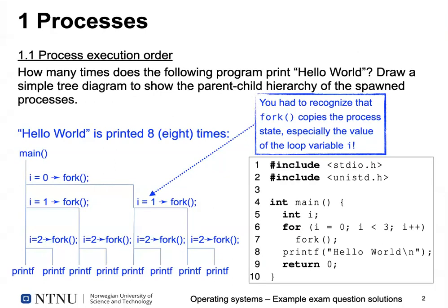The key trick here is to know that fork copies the state of a process — it doesn't start from scratch. It keeps the information about which loop iteration we are in and continues from there, instead of starting the loop from scratch for each new process.